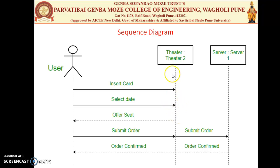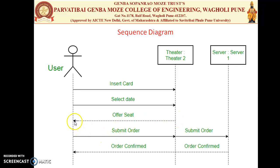After selecting the date, the theater system provides the available seats. The user confirms particular seats and submits the order to the theater. The theater then goes to the server to submit the order, checking for available offer seats. After booking, the order is confirmed by the server, then confirmed by the theater, and finally confirmed to the user.